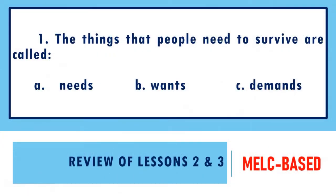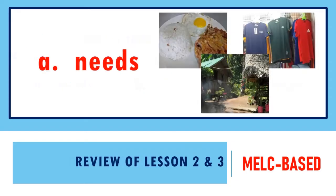Question 1. The things that people need to survive are called: A. Needs, B. Wants, C. Demands. What is your answer? If your answer is letter A, good job, you are correct.